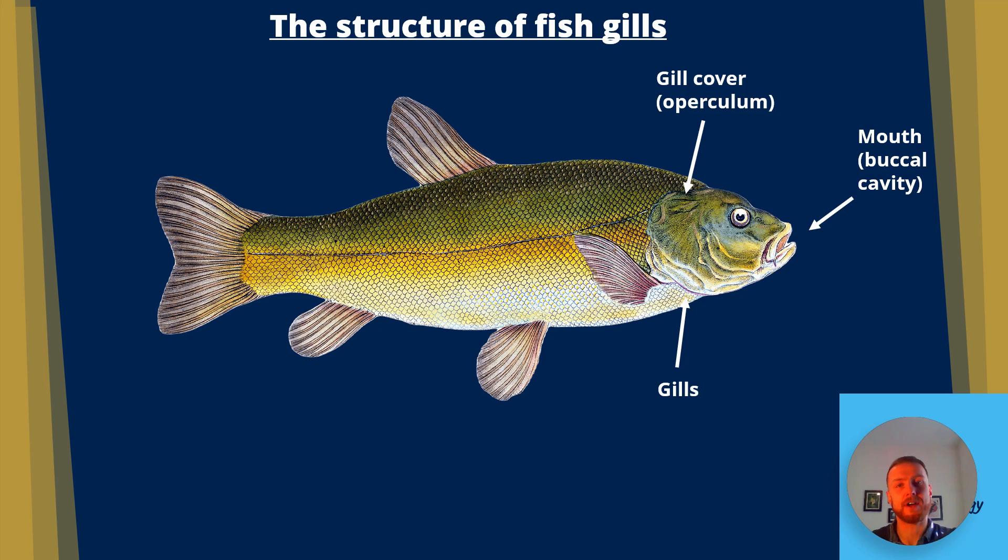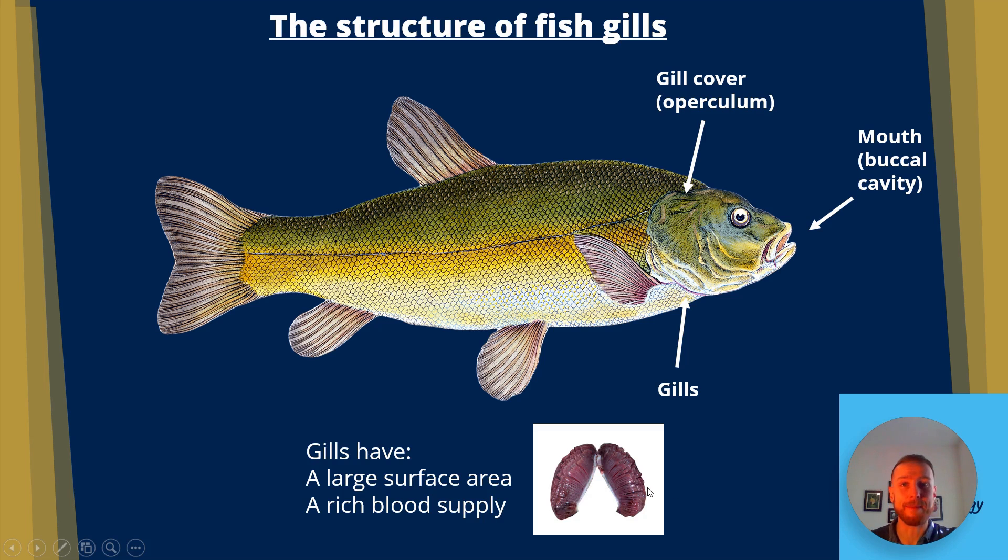Next we have the gills. They're delicate. They're the gas exchange surface in the fish and here we have an image showing the structure of the gills. Notice how they're nice and dark red showing they've got a rich blood supply and look at the surface area on them. They've got loads of filaments which we'll cover a bit more later but that's really going to dramatically increase the surface area speeding up the exchange of gases.